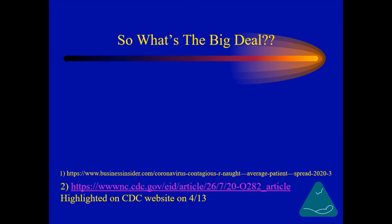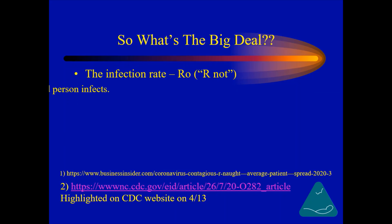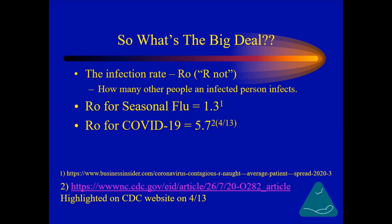In another presentation, we showed that the COVID-19 virus is no more deadly than the common flu. Well, if that's the case, what's the big deal? It has to do with the infection rate, which is called R0. R0 represents how many other people an infected person infects. For example, the R0 for the seasonal flu is only 1.3, but the R0 for COVID-19 is believed to be as high as 5.7. What this means, practically speaking, is that every person infected with COVID-19 will infect an additional 5.7 people. Therefore, COVID-19 is 4.38 times more infectious.